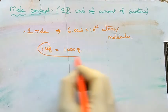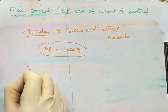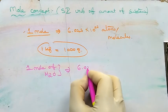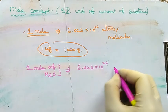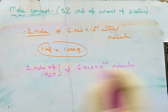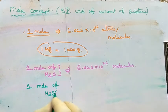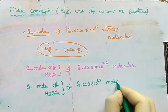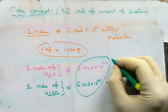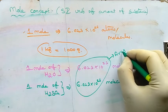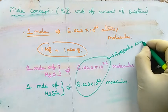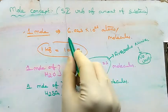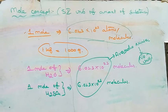Just as in one kilogram there are one thousand grams, in one mole there are 6.023 × 10²³ atoms or molecules. For example, one mole of water contains 6.023 × 10²³ molecules of H2O, and one mole of H2SO4 contains 6.023 × 10²³ molecules of H2SO4. This number is called Avogadro's number and has no unit.